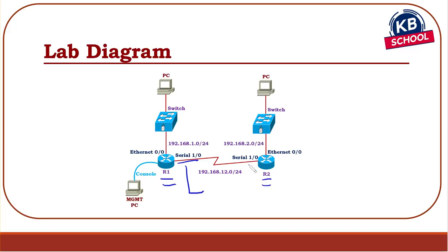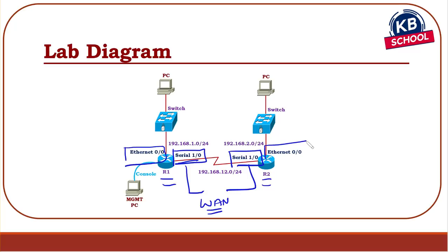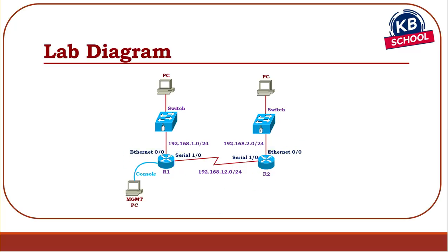Our focus in this lab is the WAN interface. I'll also be looking at how interfaces should be referenced — how is this the serial 1/0 interface? How is this the Ethernet 0/0 interface? How do I reference that inside router config mode? Let's get started with the first topic: stepping through the different configuration interface modes on a router.